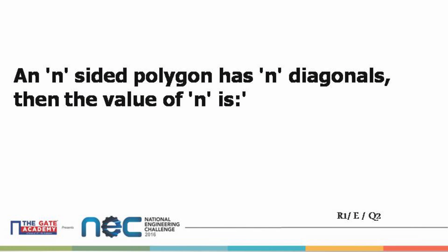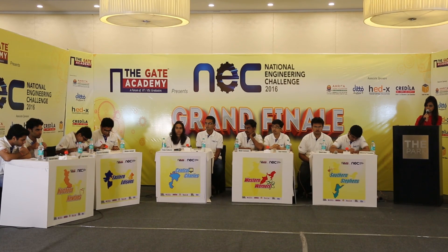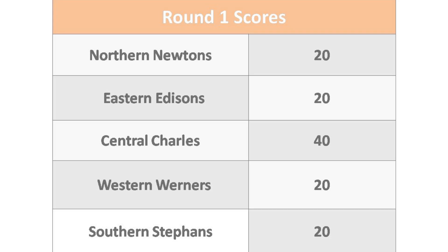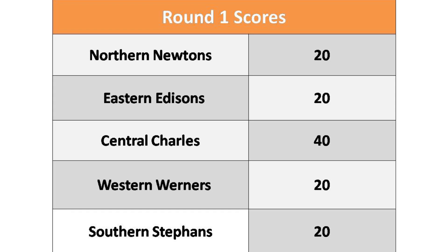30 seconds — you need to freeze your answers. Number two is five. The scoreboard shows central Charles with 40 points while the rest remain at 20 points each.